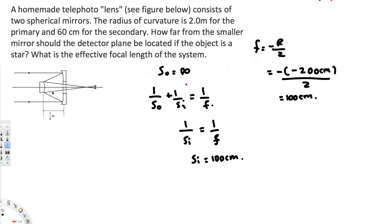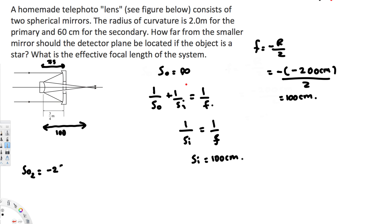The first image forms at 100 centimeters. The separation between the two mirrors is 75 centimeters — that's 3/4 of a meter. The secondary mirror is at 75 centimeters, but the image would form 25 centimeters behind it. So the object distance for the secondary mirror is negative 25 centimeters, since it's behind the mirror: SO₂ equals negative 25 centimeters.